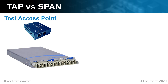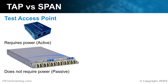The first example has one incoming, one outgoing, and one monitor port. The second example takes two incoming, two outgoing, and two monitor ports. There is also one big difference between the two: the first one is active, meaning it requires power to operate, while the second is passive and does not require power to operate.